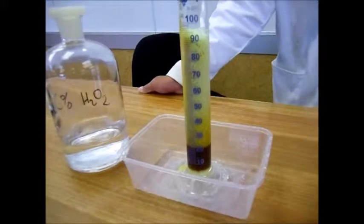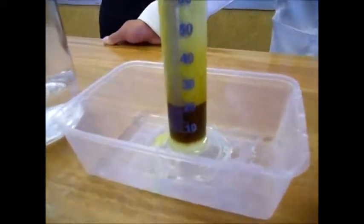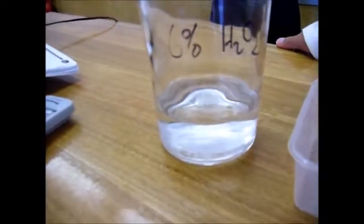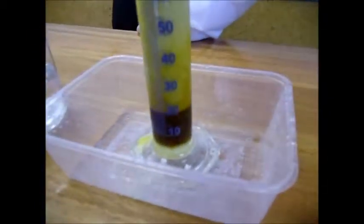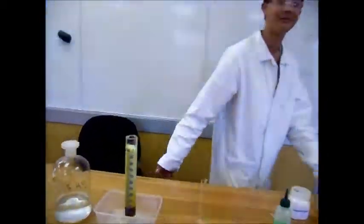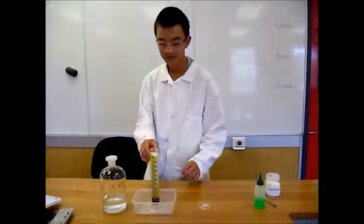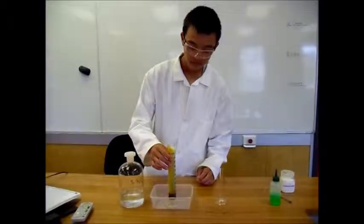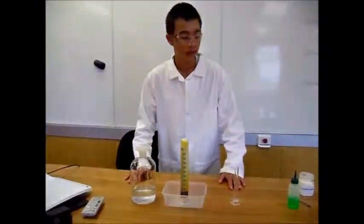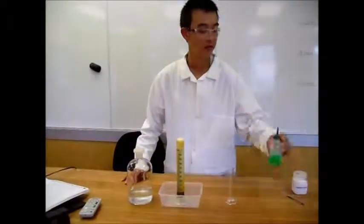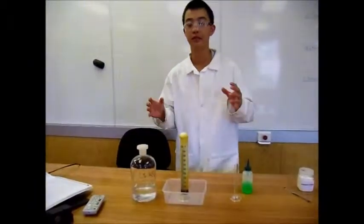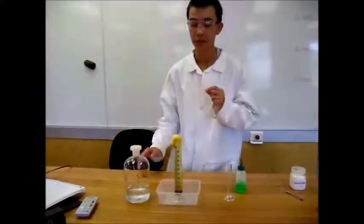The colour change indicates that a chemical reaction is occurring. You may ask why we used the dishwashing liquid — it is because we wanted to quantify the amount of gas produced and the rate it was being produced.